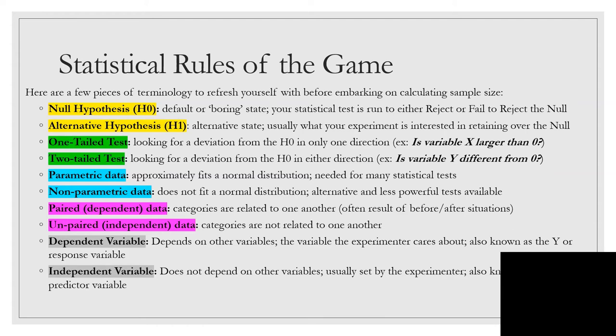Next, we have paired versus unpaired, also known as dependent or independent data. In paired data, categories are related to one another. These are often a result of a before or after situation, such as one patient is measured twice, once before a trial and once after a trial. Unpaired data, the categories are not related to one another. This would be if you had two different patients that were measured before and after a trial.